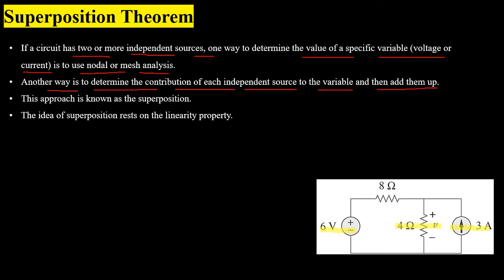In the given case, we will first assume that the circuit has only one independent voltage source and find the corresponding voltage across the 4 ohm resistor — that will be V1. Then we will assume the circuit has only the current source and find the voltage across the 4 ohm resistor again — that will be V2. At the end we will sum up both V1 and V2 to find the overall voltage. This is known as superposition theorem, which is based on the linearity property.